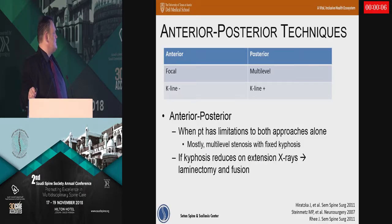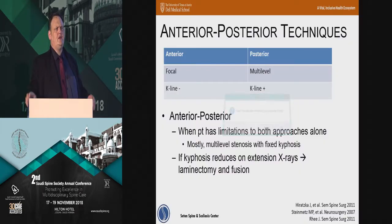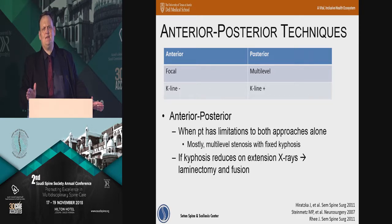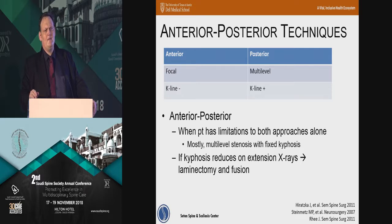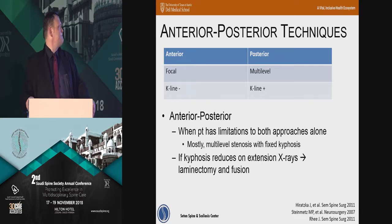Anterior-posterior techniques are used, unfortunately more frequently than I'd like, typically in the context of multilevel stenosis with fixed kyphosis. If the patient can get into lordosis on extension, a laminectomy and fusion is a good option — not necessarily a front-back. But in patients with fixed kyphosis, going to the front to release the kyphosis, then going to the back to decompress and fuse, is an option. In the most severely stenotic patients with a 3-4 mm canal, I'll typically decompress from the back first, then complete the corpectomy anteriorly at the worst levels, then go back posteriorly and lock it down into lordosis. Thank you.